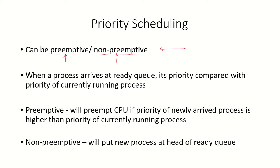When a process arrives and enters the ready queue, its priority is compared with the priority of the currently running process. If the new process has higher priority and scheduling is preemptive, the system will preempt the CPU from the running process and give it to the new higher-priority process.